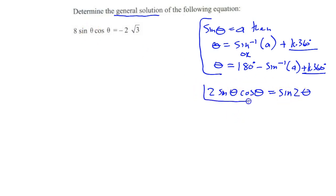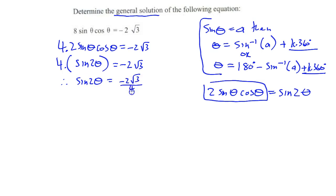So how can we get this 2 sin theta cos theta? Well, we can say 4 times 2 sin theta cos theta equals minus 2 root 3, 4 times sin 2 theta equals minus 2 root 3, therefore sin 2 theta equals minus 2 root 3 over 4.